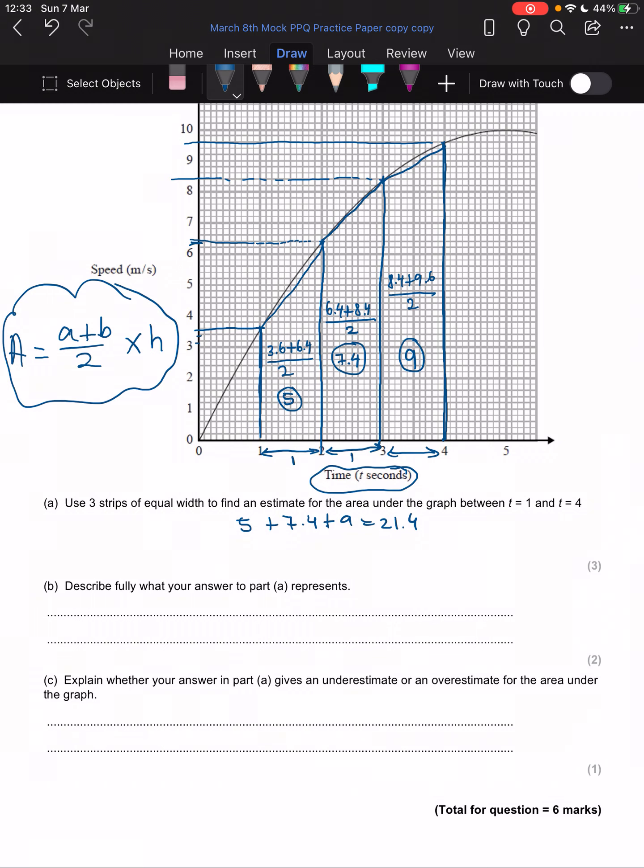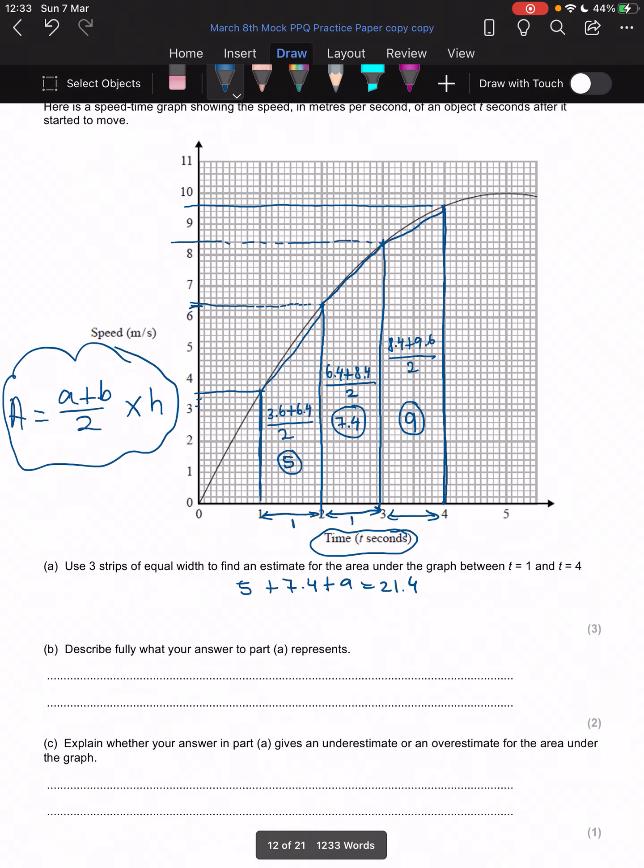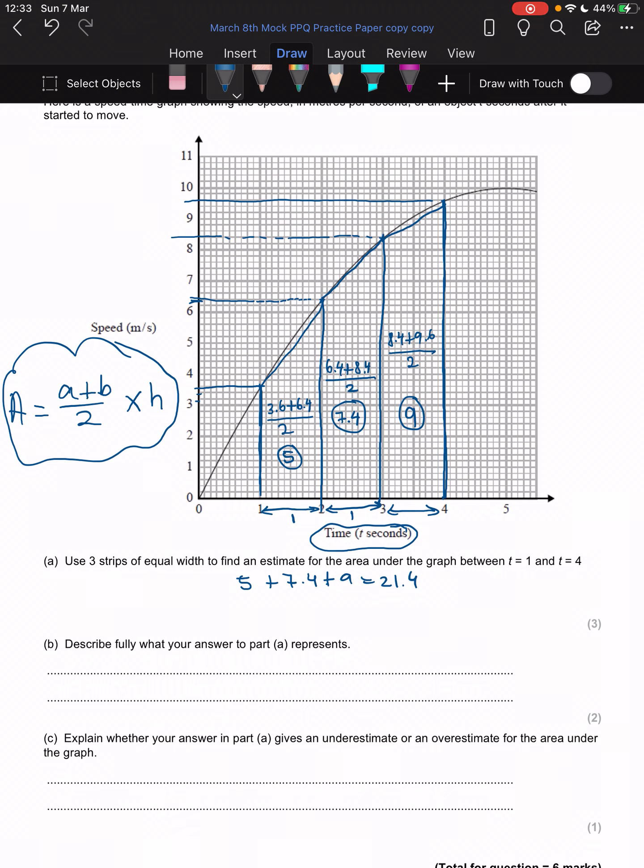Part b: describe fully what your answer to part a represents. Whenever you're working out the area under the graph, it represents the distance traveled per second. Okay, because our time is measured in seconds.